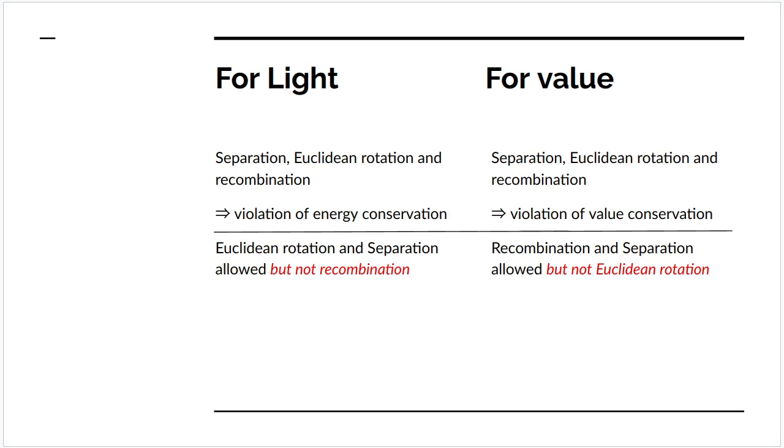So what we're saying is that for light, separation, Euclidean rotation and recombination would violate energy conservation. And what is actually allowed is Euclidean rotation and separation, but not perfect recombination. So energy conservation is maintained.